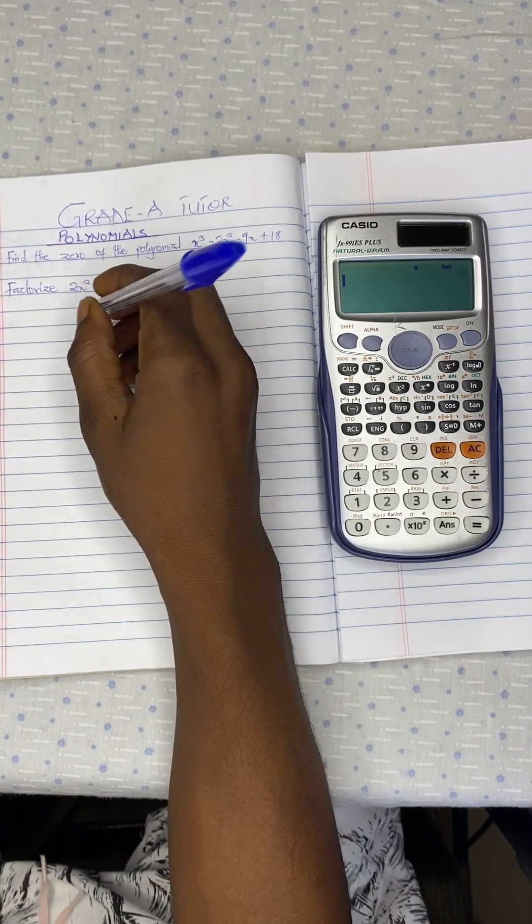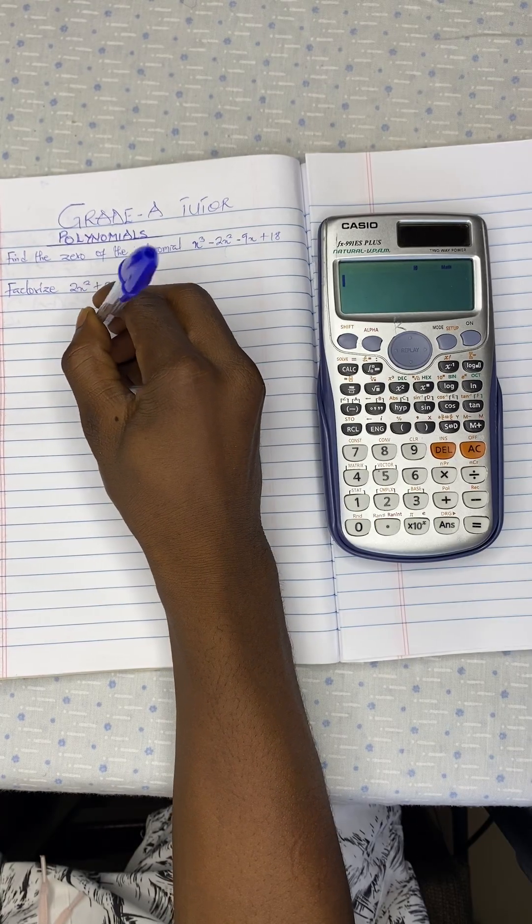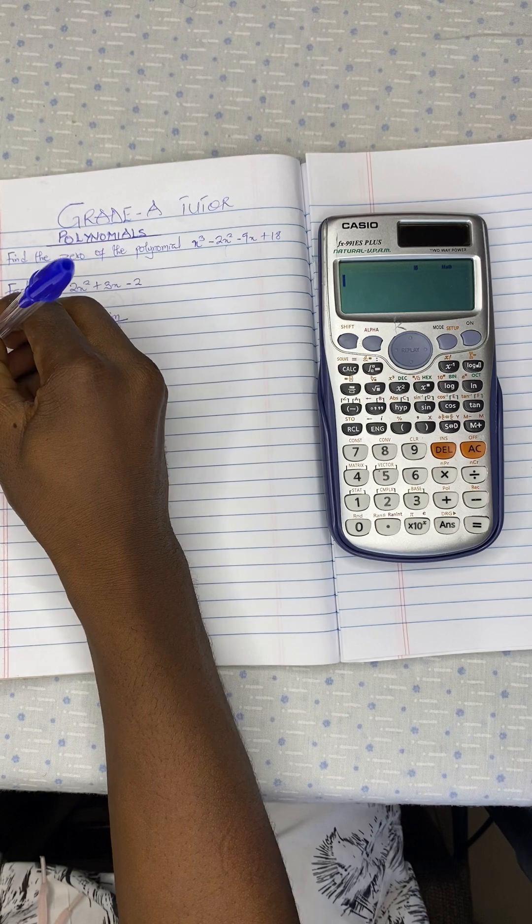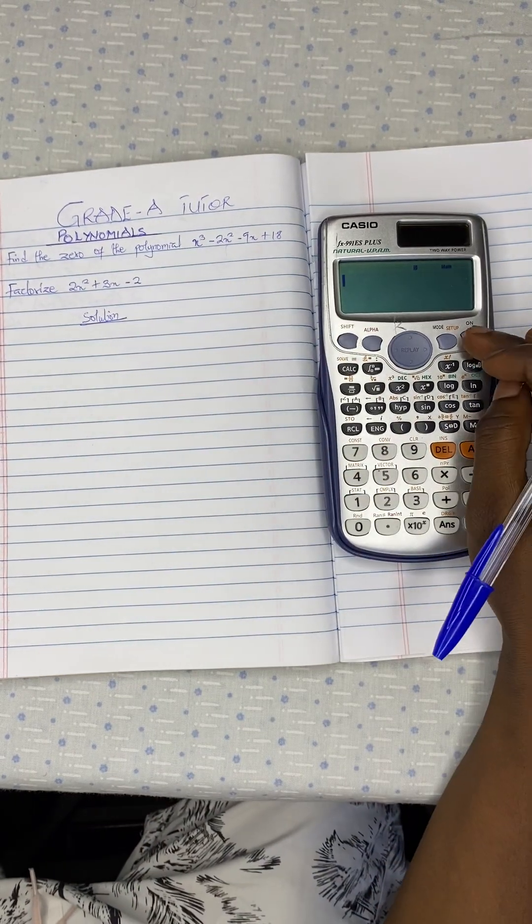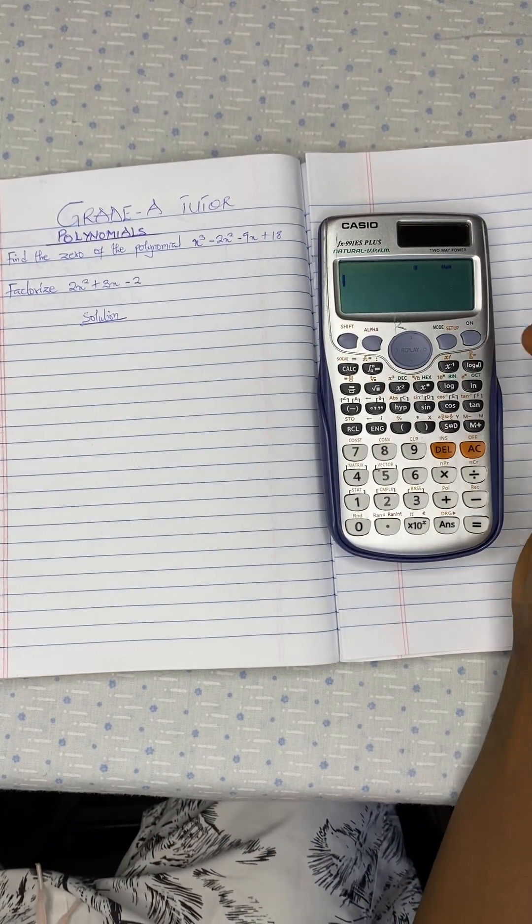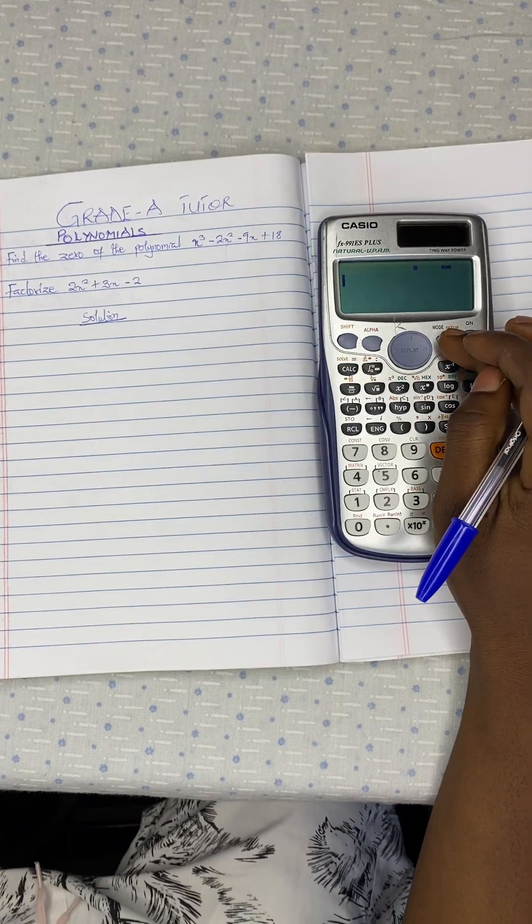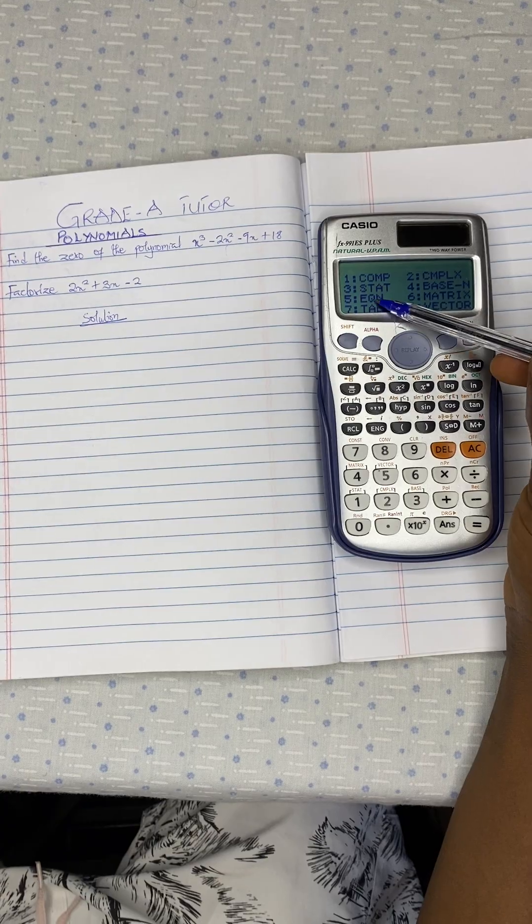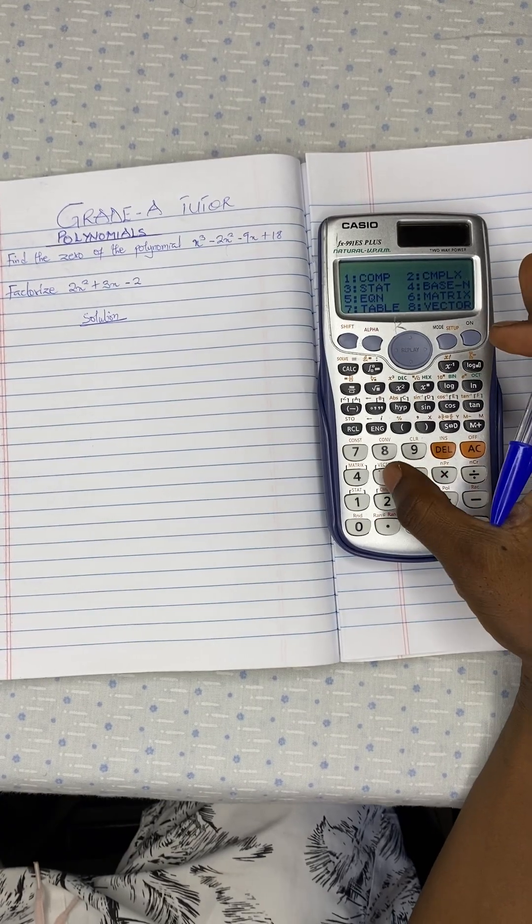So we have our solution here. Let's look at question 1. There's our calculator, it's already on. So you press on mode, and you see we have equation here, option 5. So you press on 5.